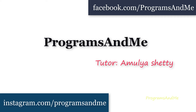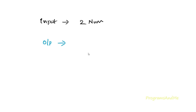Hello guys and welcome to my YouTube channel. Today in this tutorial we will write a Python program to find out the largest number in two given numbers. The input is two numbers, and the output is the largest number. For example, if I take two numbers as 10 and 20, I need to get the output: largest number is 20.